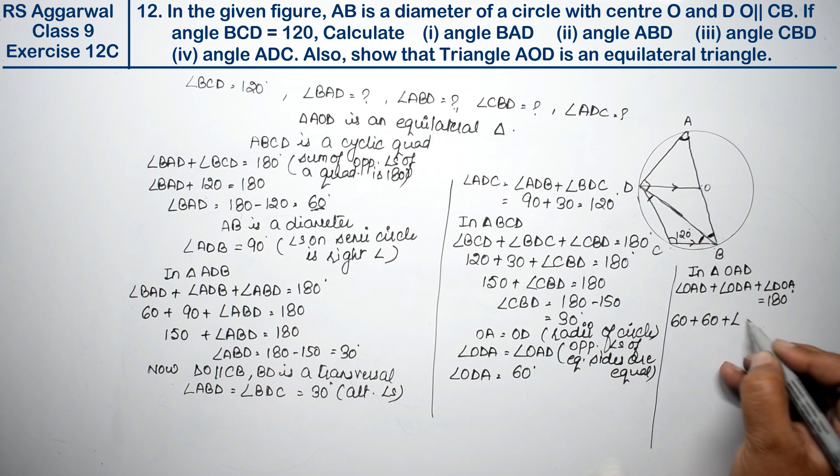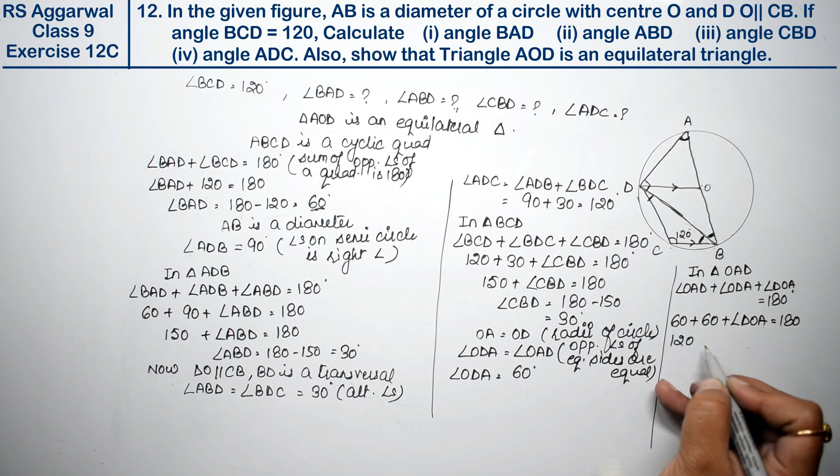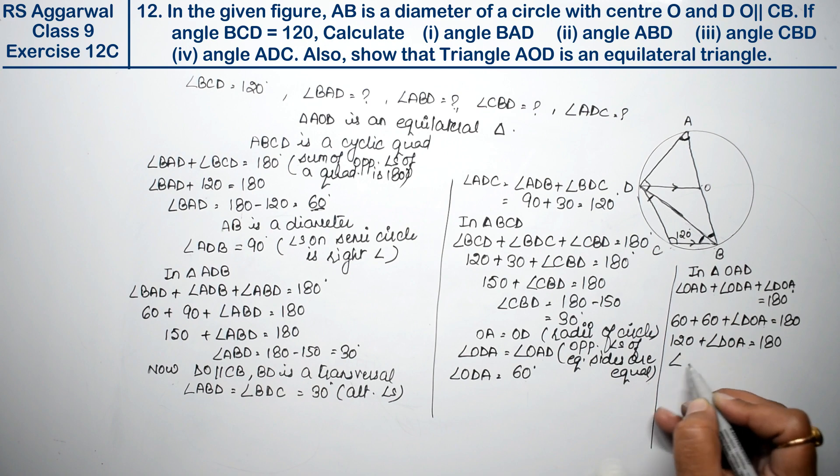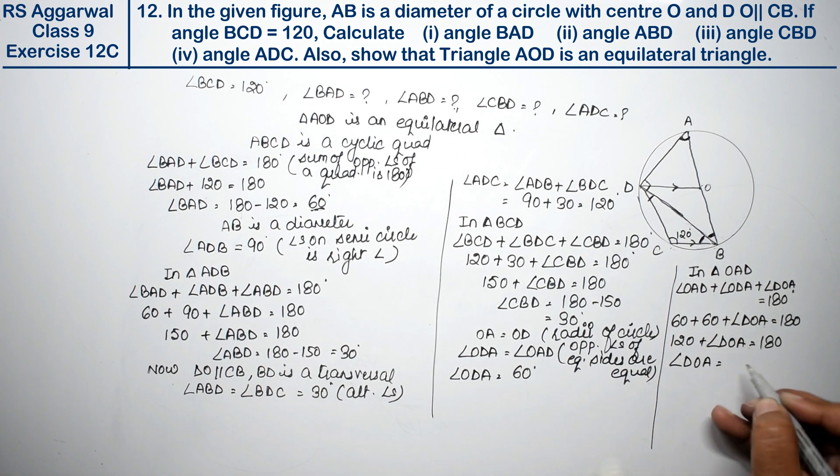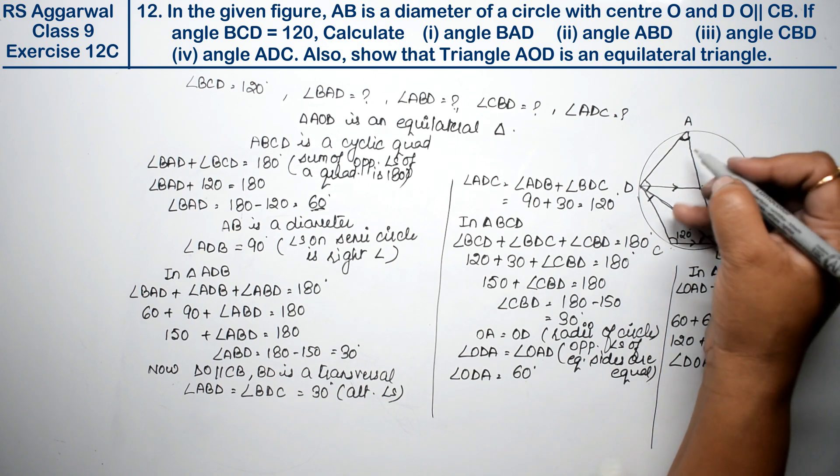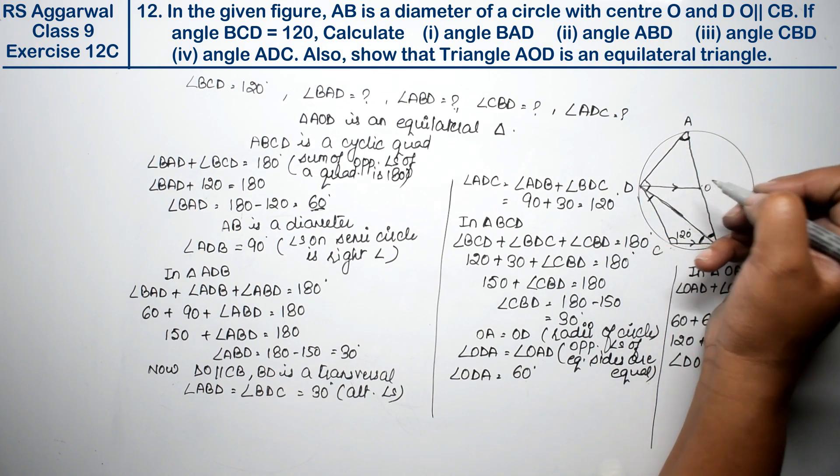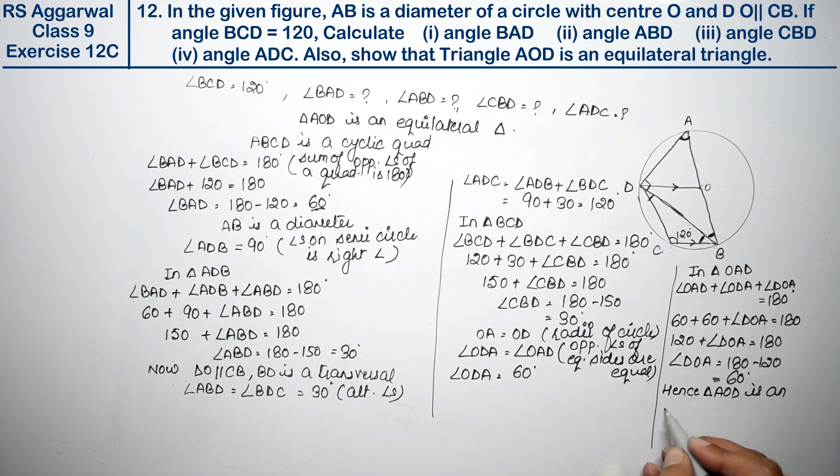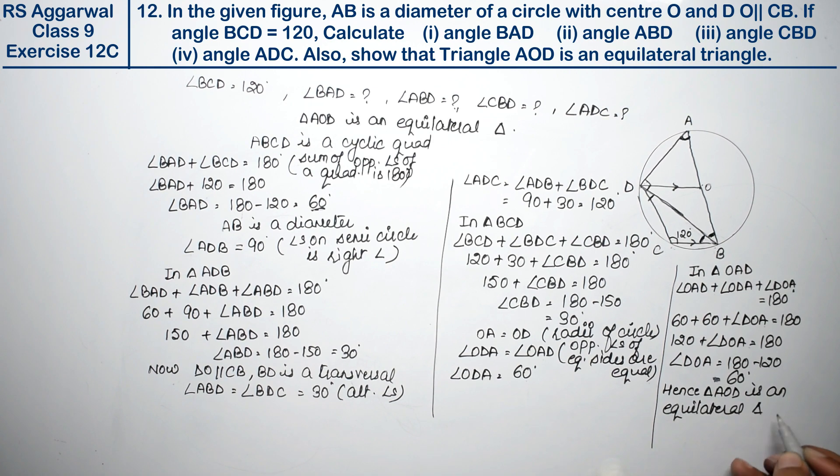OAD is 60 degrees and ODA is 60 degrees, so 120 plus DOA equals 180. Therefore, DOA equals 180 minus 120, which is 60 degrees. Since all three angles are 60 degrees, triangle OAD is an equilateral triangle.